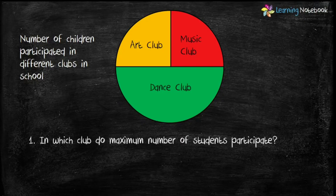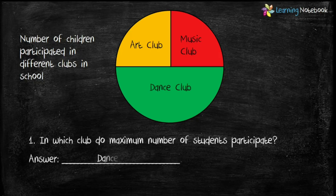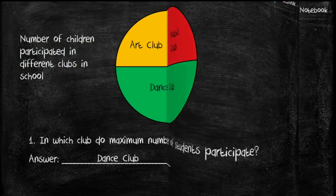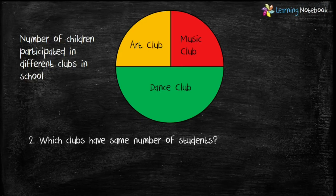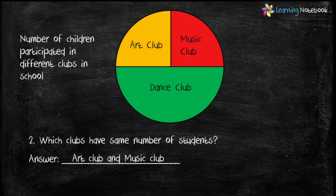Now you must have understood how to read a pie chart. Question one: in which club do the maximum number of students participate? The dance club is represented by half of the circle, so the maximum number of students are in the dance club. Both art club and music club each represent one-fourth of the circle, so both art and music clubs have the same number of students.